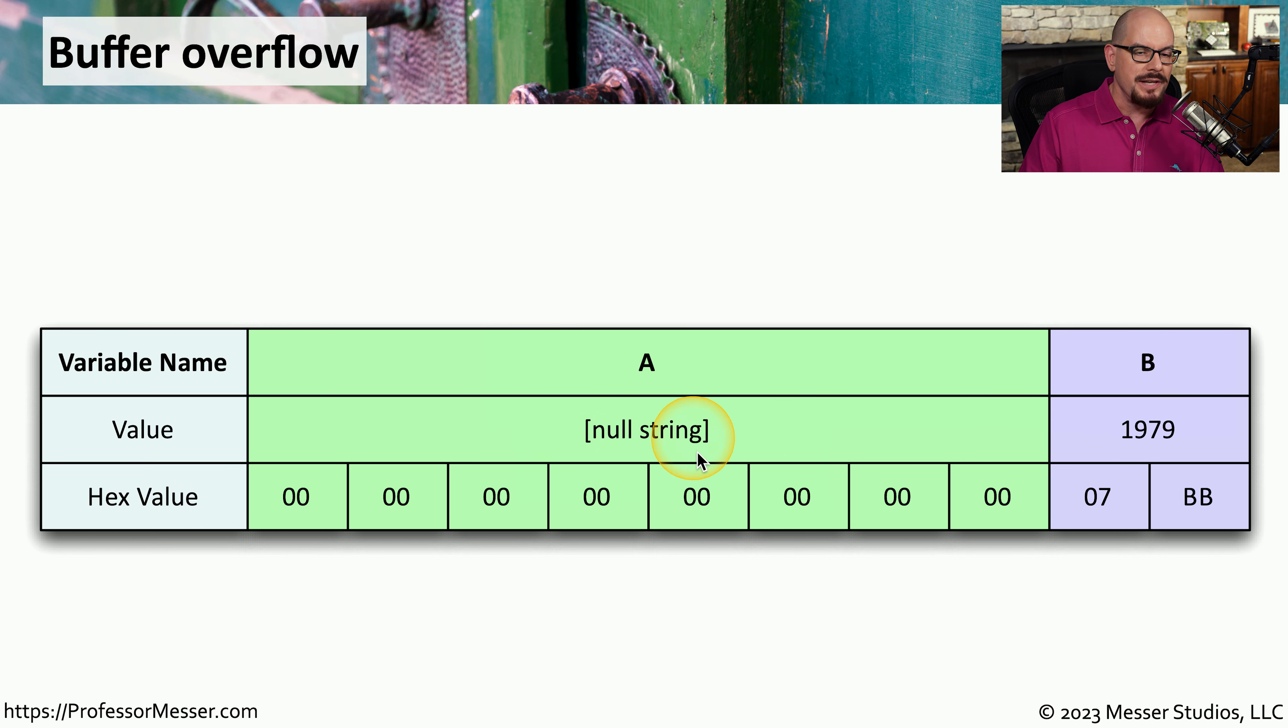And you can see that variable A has nothing currently written to it. It is all zeros, and it has eight different bytes that you could store as variable A. Variable B has already been written to memory. It is two bytes long, and you can see the decimal value of variable B is currently 1,979.